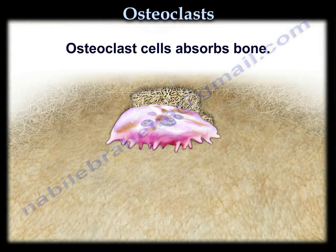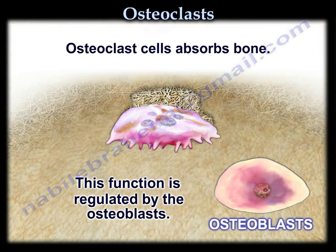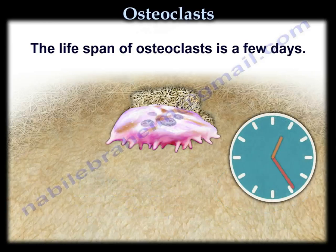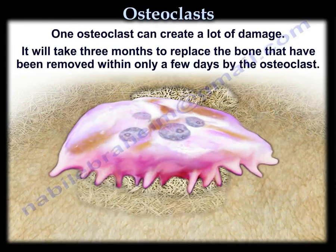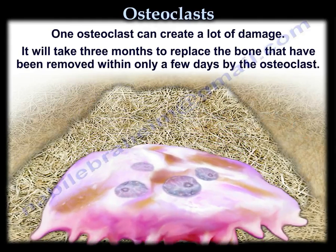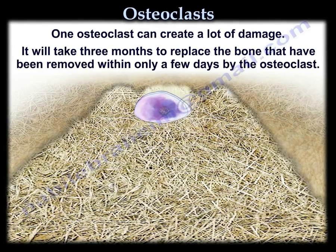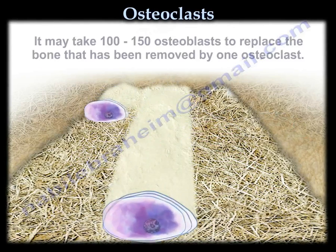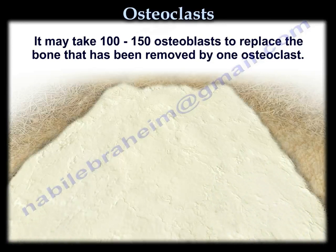The osteoclast absorbs the bone; this function is regulated by the osteoblast. The osteoclast's lifespan is only a few days, yet one osteoclast can create a lot of damage. It will take three months to replace the bone removed in just a few days, and it may take 100 to 150 osteoblasts to replace the bone removed by one osteoclast.